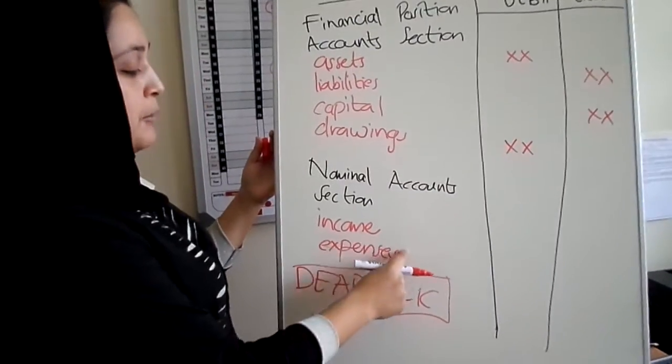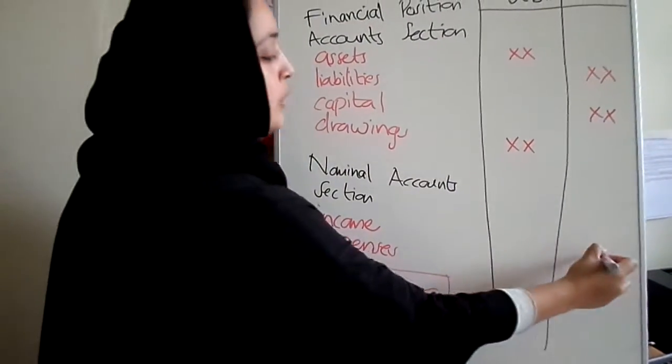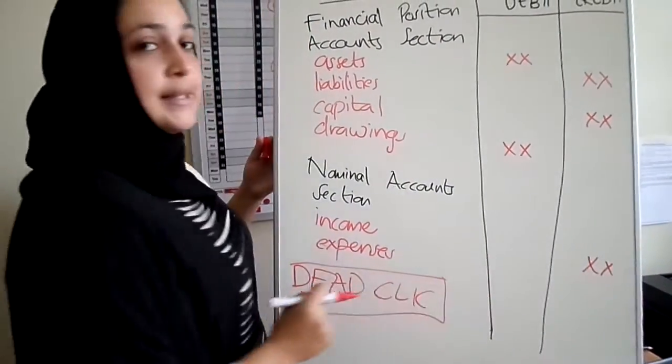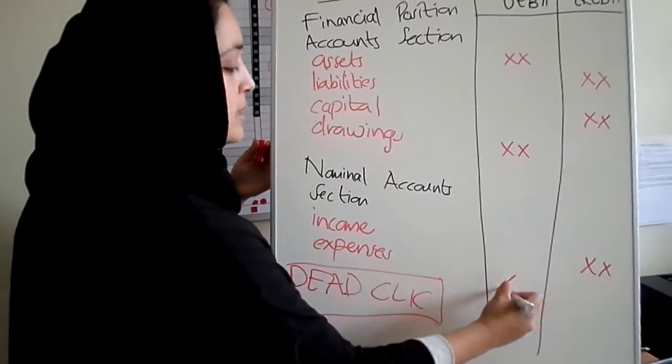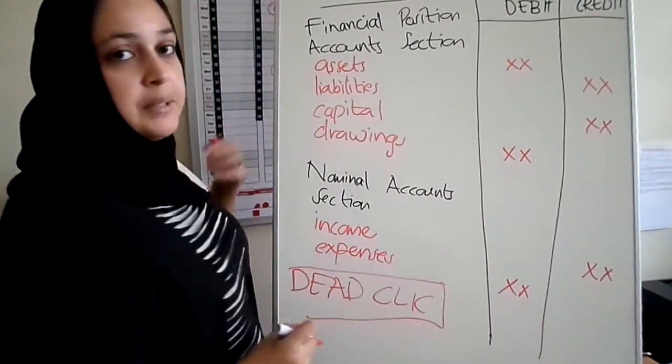In your nominal account section, all your incomes will have balances on the credit side and all your expenses will be listed on the debit side.